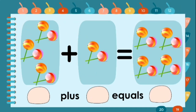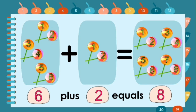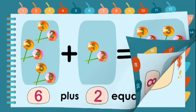Next. Students, let's count together: one, two, three, four, five, six — six lollipops. Plus one, two — two lollipops. Equals. Let's count: one through eight. Six lollipops plus two lollipops equals eight.